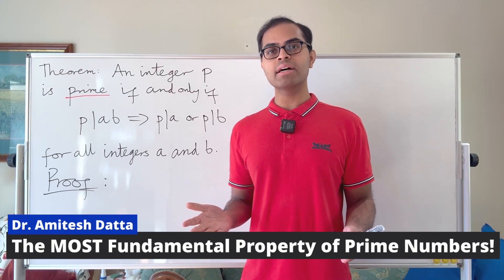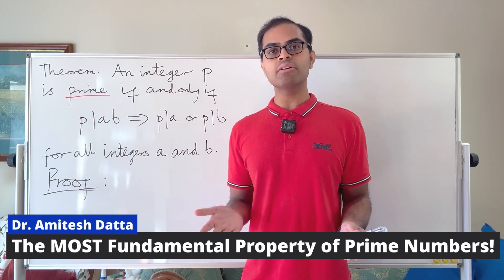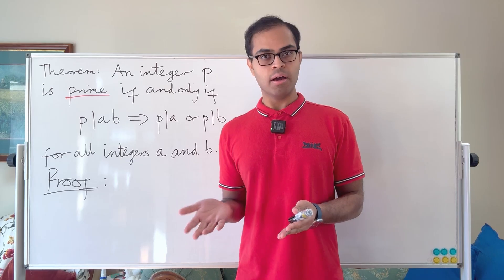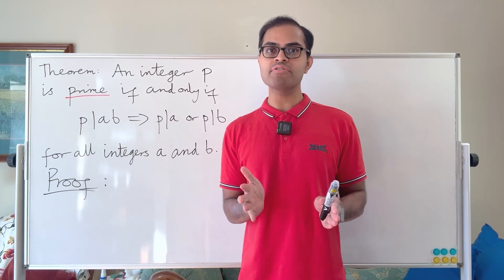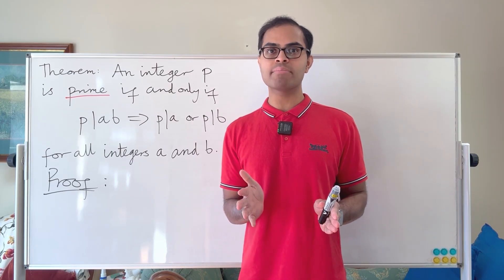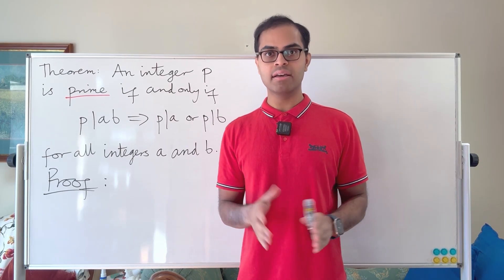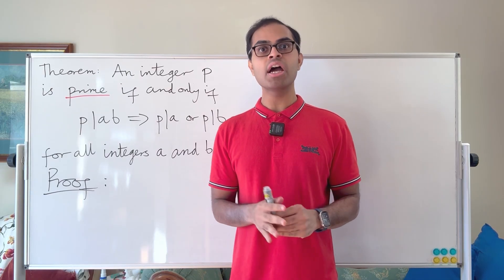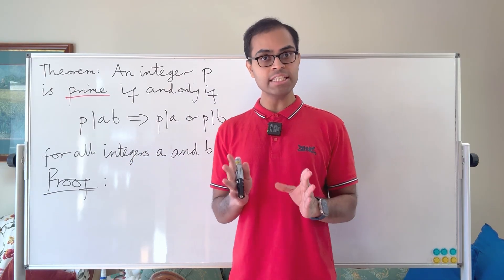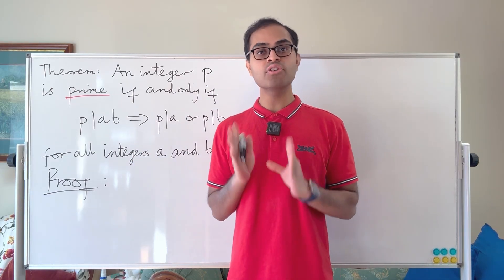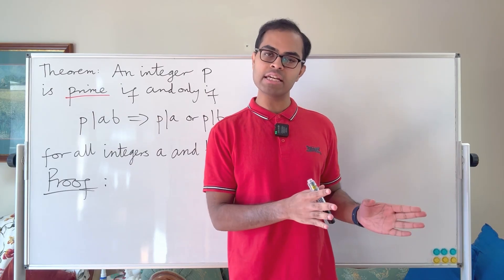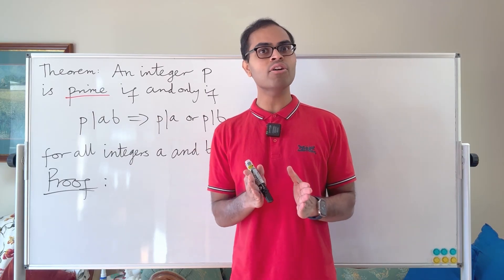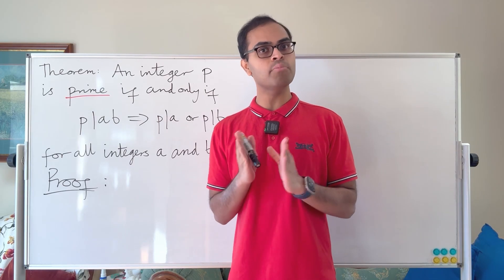You know that a prime number is a number whose only factors are one and itself. But actually that is the wrong definition of prime number in higher-level mathematics. In this video I'm going to show you the right definition and rigorously prove that for the integers it's equivalent to the definition I just stated. In higher number systems it isn't, but drop a comment down below if you want to learn more about that.